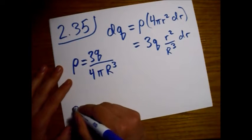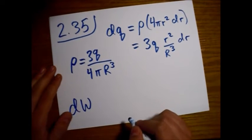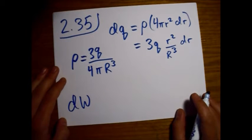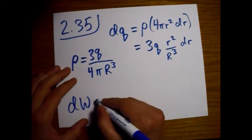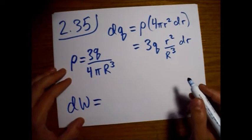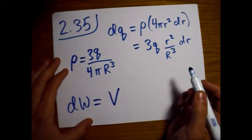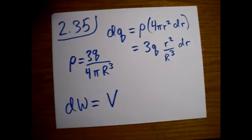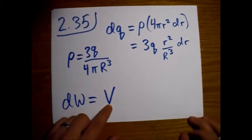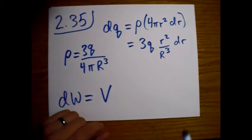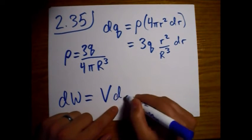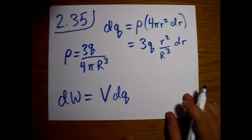Now let's look at how much work does it take to bring in this little amount of charge dq. It is whatever the potential is that we're bringing it to. We're bringing it from infinity to a surface and space that's all at some constant potential because of symmetry. The whole surface will be at a constant potential. We multiply that by the infinitesimal charge.